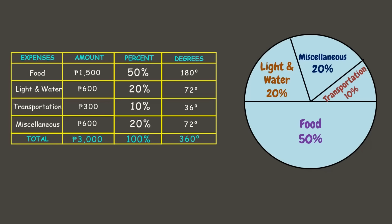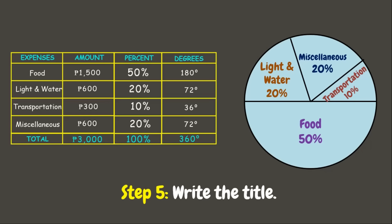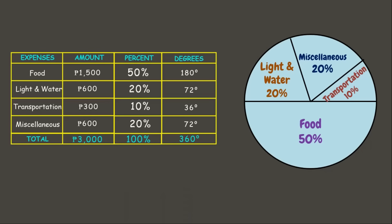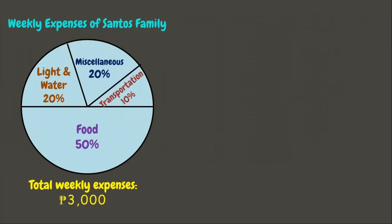For our final step, don't forget to write the title. The title of this graph is 'Weekly Expenses of Santa's Family.' Now that we are done constructing the pie graph, it's time to interpret it by answering some guide questions.